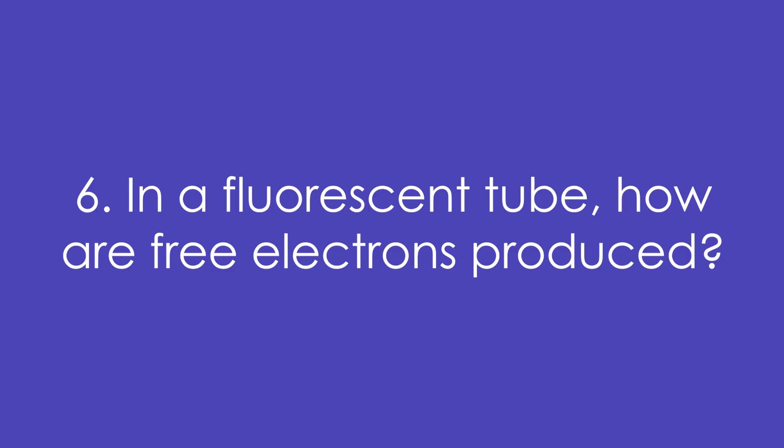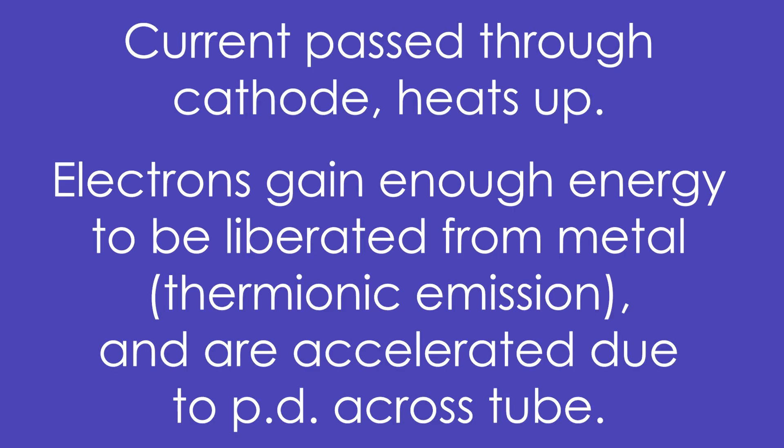Six, in a fluorescent tube, how are free electrons produced to begin with? A current is passed through the cathode metal filament and it heats up. The electrons gain enough energy to be liberated from the metal — we call this thermionic emission — and are accelerated due to the PD that has been set up across the tube.